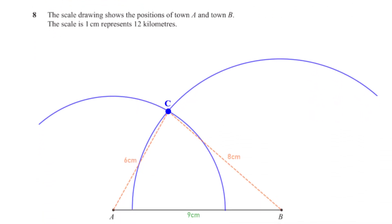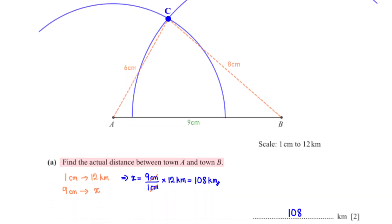The scale drawing shows the positions of town A and town B. The scale is 1 centimeter represents 12 kilometers. Find the actual distance between town A and town B. On the scale drawing, when we measure the distance between A and B, we get 9 centimeters. Using the scale conversion, we can get the actual distance, which is what we are calling X. When we cross multiply and make X the subject, this is what we get, which is equal to 108 kilometers.